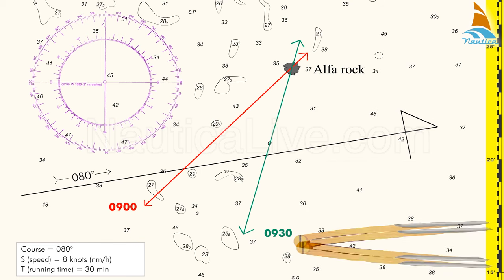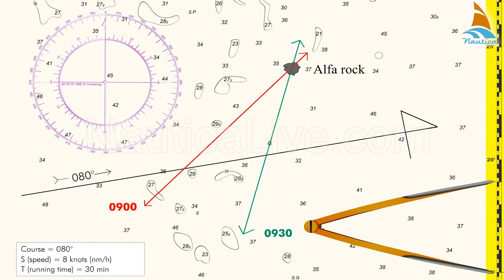Using the dividers, we span a distance of 4 miles on the latitude scale which is closest to the course line and which runs along the sides of the chart.